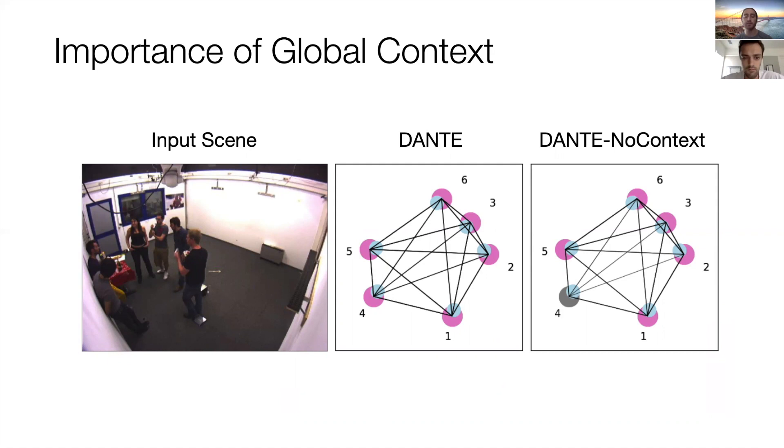However, Dante is able to correct for this by using the social context to understand that persons will be farther away from each other when in large groups.